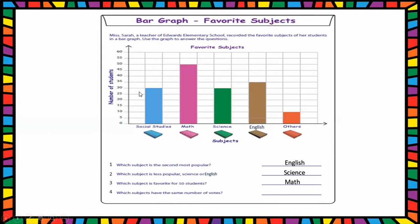Then fourth question: Which subjects have the same number of votes? See, the bar graph is showing 30 students' favorite is social studies, same way science also. So these two are the same, 30 each. So social studies and science have the same number of votes.